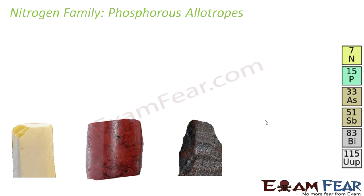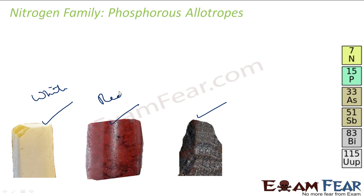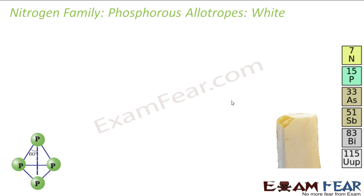Next is phosphorus, and it has three allotropes: white, red, and black. So let's study the allotropes of phosphorus.